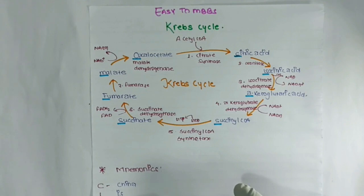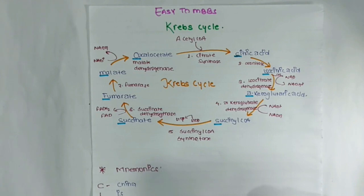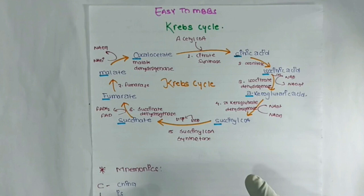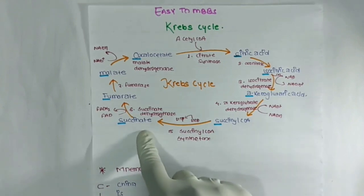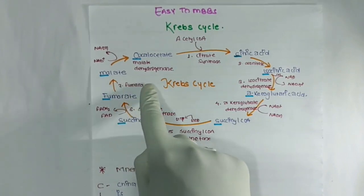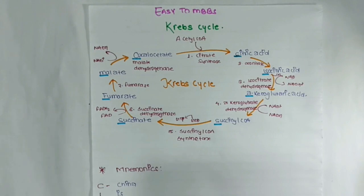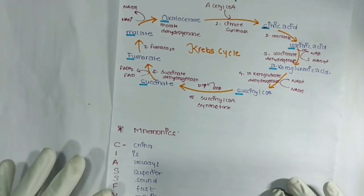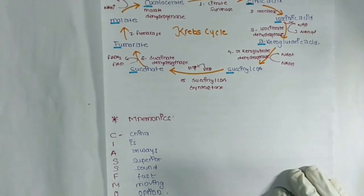Now we can see the flowchart. Oxaloacetate, with the help of enzyme Citrate Synthase, gives Citric acid. Citric acid with enzyme Aconitase gives Isocitric acid. Isocitric acid with enzyme Isocitrate Dehydrogenase gives Alpha-ketoglutaric acid. Alpha-ketoglutarate Dehydrogenase gives Succinyl-CoA. Succinyl-CoA Synthetase gives Succinate. Succinate Dehydrogenase gives Fumarate. Fumarase gives Malate. Malate Dehydrogenase gives Oxaloacetate, completing the Krebs cycle.